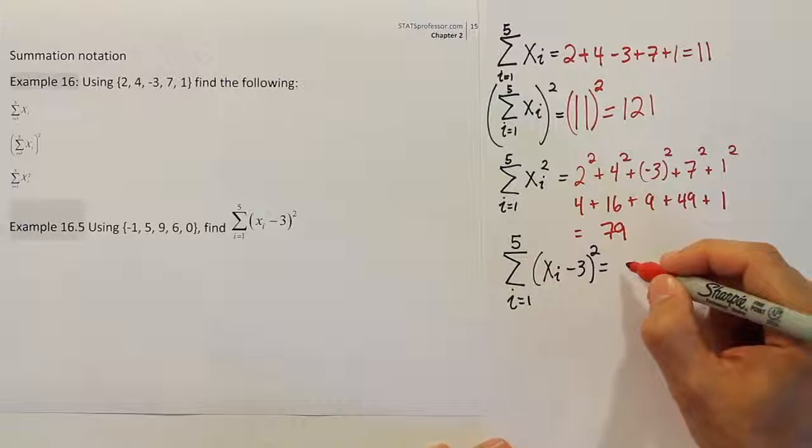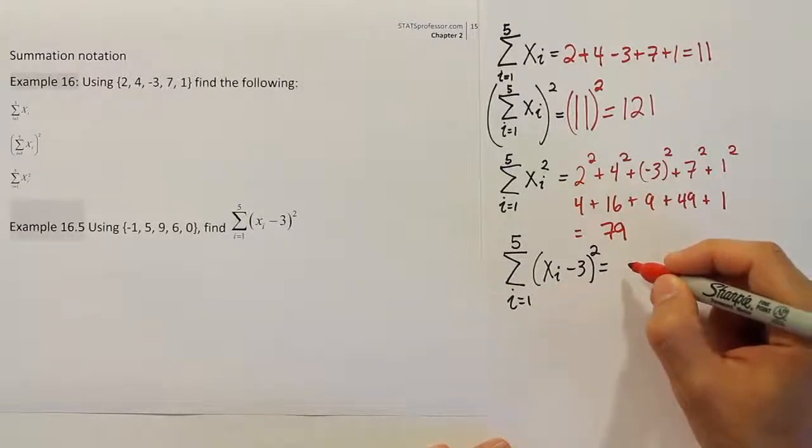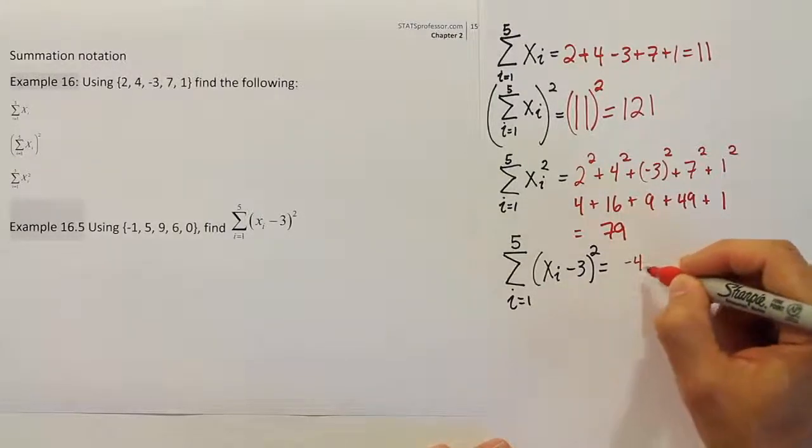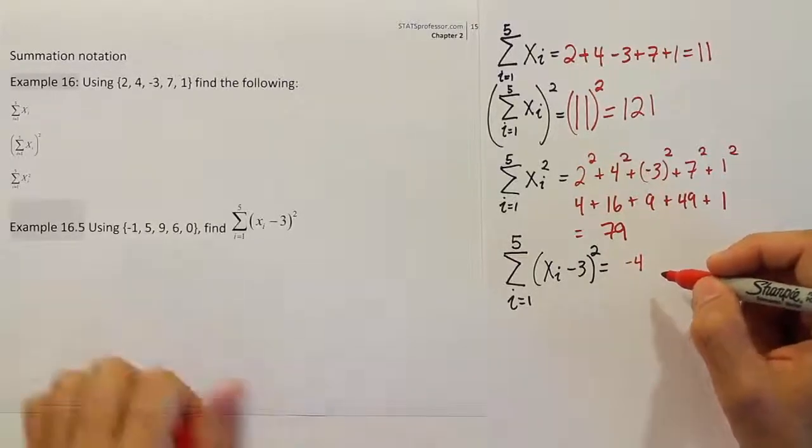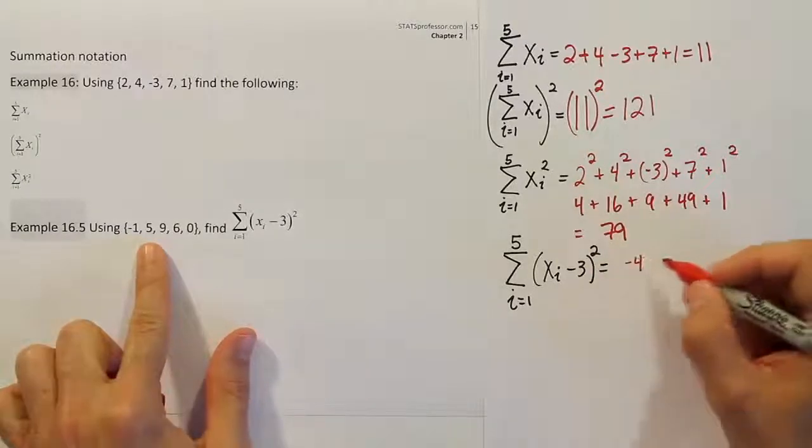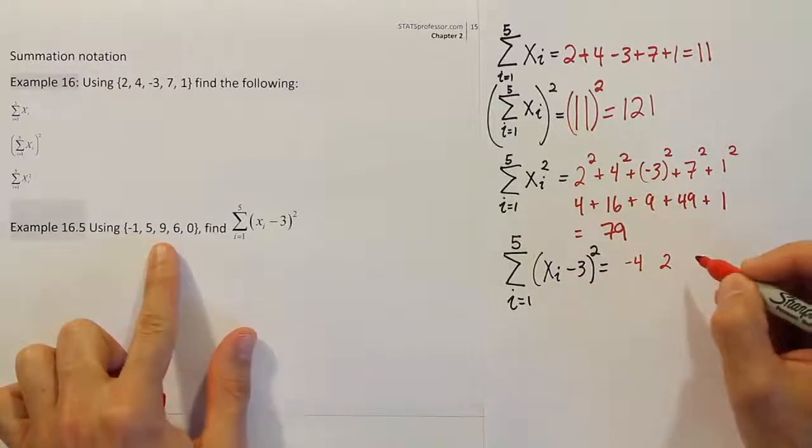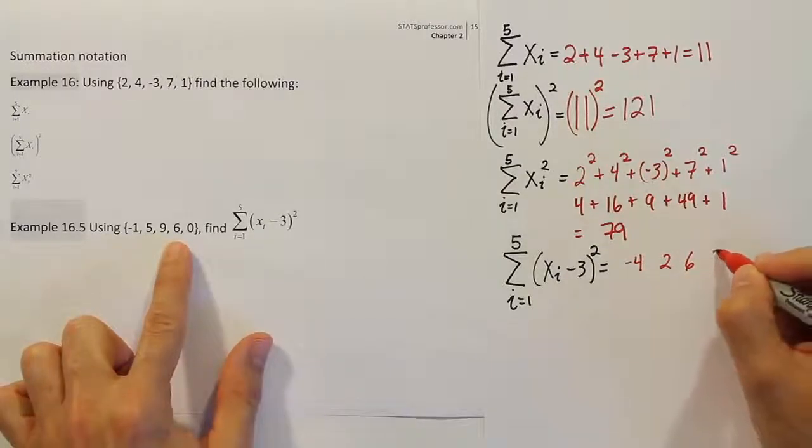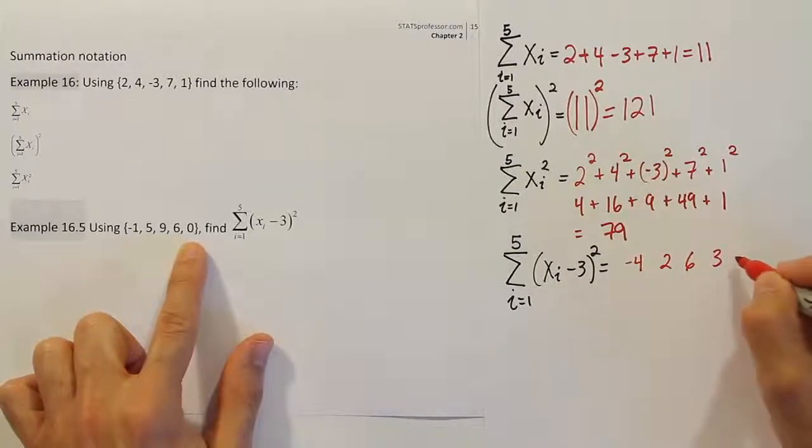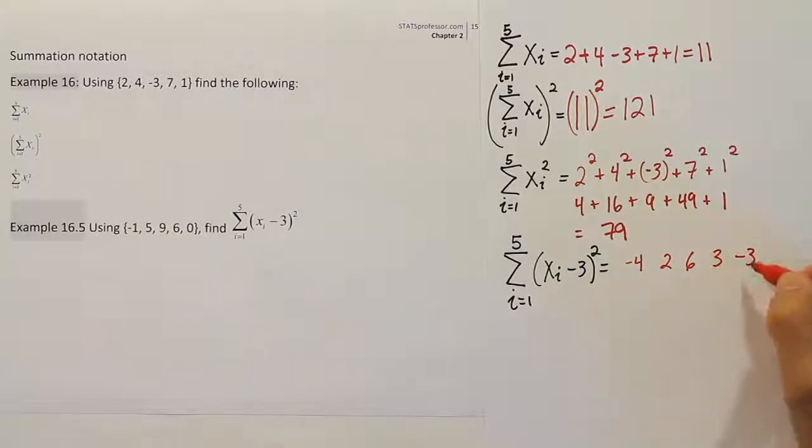So let's do that quickly. If I did negative 1 minus 3, I actually get negative 4, because minus 1 minus 3 coming together make negative 4. If I have 5, take away 3, I get 2. If I have 9, take away 3, I get 6. And if I have 6, take away 3, I get 3. And if I have 0, take away 3, I get negative 3. So those are the values I get when I initially subtract 3 from each of them.